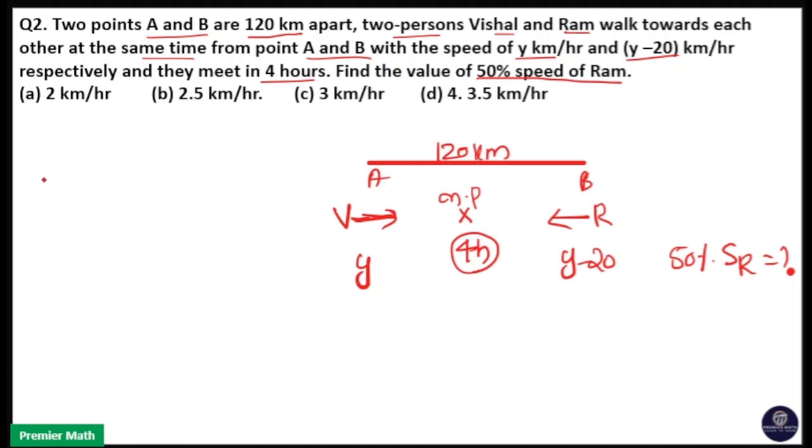Distance traveled by Vishal equals speed of Vishal Y times time taken, which is 4 hours. So 4Y plus distance traveled by Ram equals speed of Ram Y minus 20 times time traveled by Ram, which is also 4 hours.